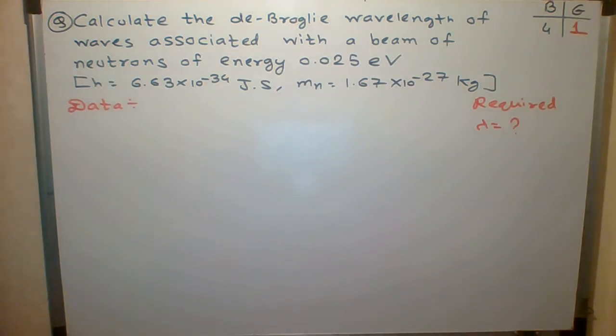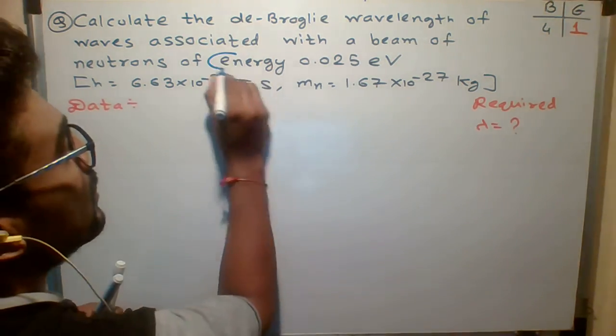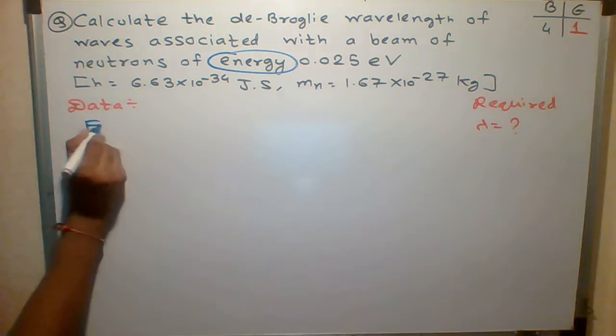They associate it with a beam of neutrons of energy. Students, what is given? The given is what? Energy. Capital E is given.